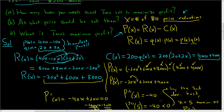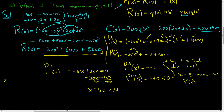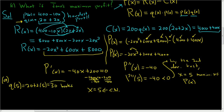Now let's go back to the questions. Part A asked: how many books per week should Jono sell to maximize profit? We know that 5 price reductions will maximize his profit, so we'll use the quantity function. Q of 5 is 20 plus 2 times 5, which equals 30. So he needs to sell 30 books to maximize profit.